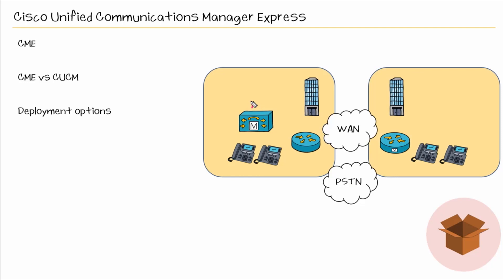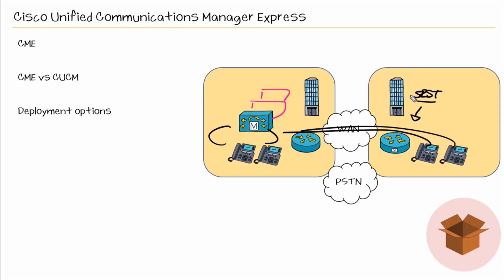Another deployment option: if you have a CUCM cluster, all your phones can register to it even at remote sites. But the router at the remote site can offer SRST functionality — Survivable Remote Site Telephony. SRST is a slimmed-down version of Call Manager Express, so it doesn't support all CME features. SRST is intended as a short-term solution. If you had an issue with your WAN and lost connectivity to your CUCM cluster, phones at local sites can fail over to that local router running SRST and still have call processing functionality. If you had connectivity out to the PSTN, your users could still make outbound calls to the PSTN.